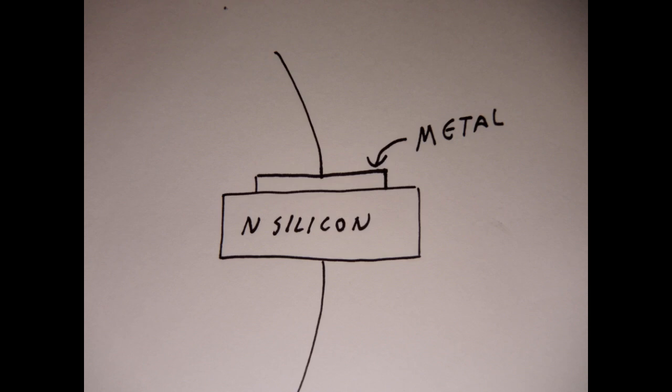Schottky barrier diodes are constructed from an N-doped bit of silicon. Then the other side of the diode is a metal contact, unlike a silicon diode where it's N-doped and P-doped silicon. The Schottky barrier diode has a much lower forward voltage drop.